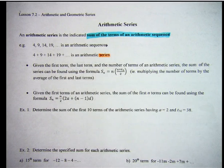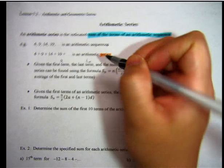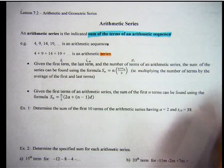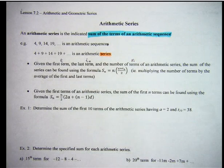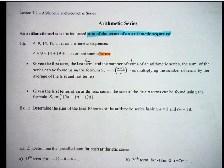Given the first term, the last term, and the number of terms of an arithmetic series, so first term A, the last term TN, and the number of terms N, the sum of the series can be found using this formula. SN equals N times A plus TN over 2. So you're multiplying the number of terms by the average of the first and the last terms.